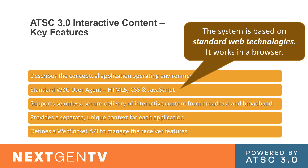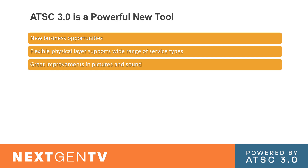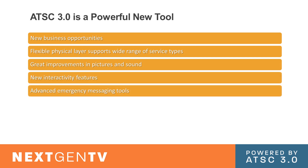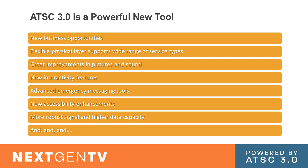So in summary: new business opportunities, flexible physical layer, great improvements in pictures and sound, new interactivity, advanced emergency messaging, more accessibility enhancements, robust signal, higher data capacity, and the list goes on. You can see why the broadcasters are pretty excited about this. Right now, trials are going on in Phoenix, Dallas, Cleveland, East Lansing, Santa Barbara, and Raleigh — and the list is growing. The most recent one to go on air was WKEYT in Santa Barbara — they had a big launch party and it was really fantastic.